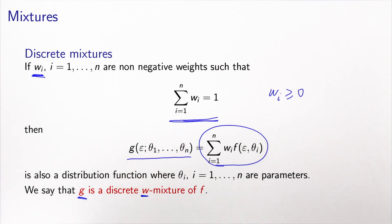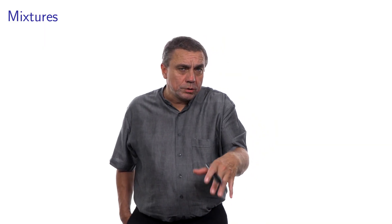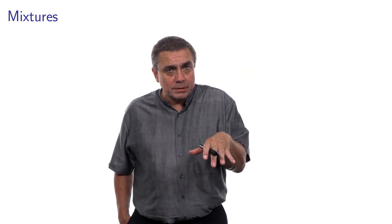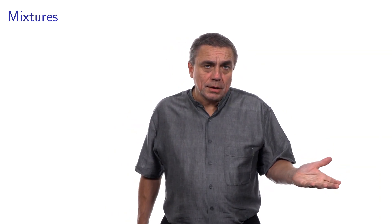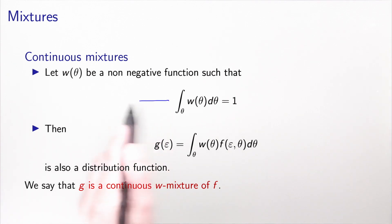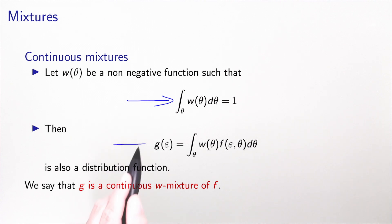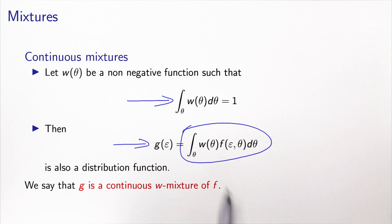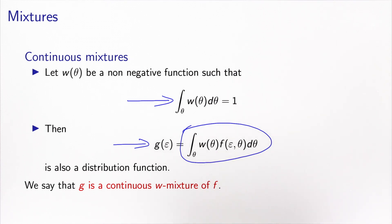Why discrete? Because these weights follow a discrete distribution. Indeed, the fact that the sum of the w's equals one can be interpreted as the w's representing some sort of probability. We can also define continuous mixtures. The difference is that instead of w's with discrete values, we have w as a continuous function of theta, but it must be a valid probability distribution function — it must integrate to one so that the mixture corresponds to a convex combination. Here g is defined as the integral of w times f, which is the convex combination of the parametric family f with respect to the weights w. Again, the theory guarantees this is a valid distribution function. We say that g is a continuous w-mixture of f.